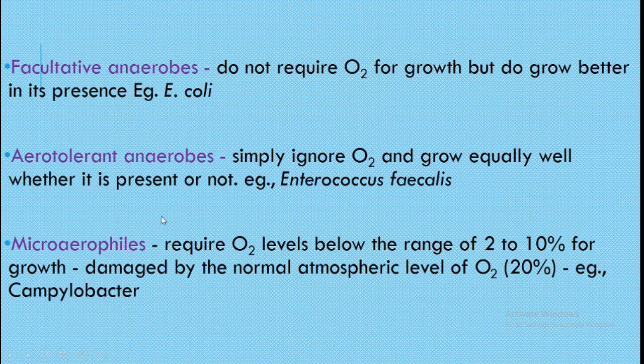Aerotolerant anaerobes simply ignore oxygen and grow equally well whether oxygen is present or not — they are simply not bothered by its presence or absence. Example: Enterococcus faecalis. Microaerophils are another group which require, as the name suggests, a little lesser oxygen than the normal atmospheric level. Normal level is 20% and microaerophils require oxygen in the range of 2 to 10% for their growth. Example: Campylobacter.